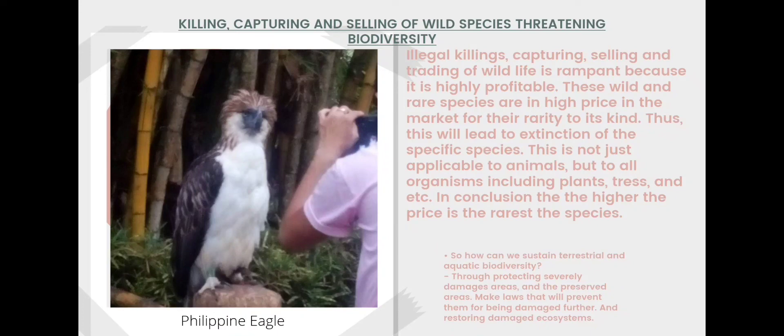To sustain terrestrial and aquatic biodiversity, we should focus on protecting severely damaged areas, preserving existing areas, making laws that prevent further damage, and restoring damaged ecosystems.